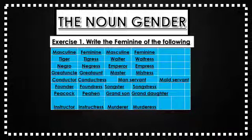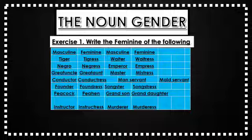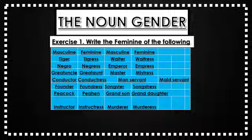Exercise number three: write the feminine of the following. Tiger — tigress, negro — negress, great uncle — great aunt, conductor — conductress, founder — foundress, peacock — peahen, instructor — instructress, waiter — waitress, emperor — empress, master — mistress, man servant — maid servant, songster — songstress, grandson — granddaughter, murderer — murderess. I hope you will complete this page number 10.